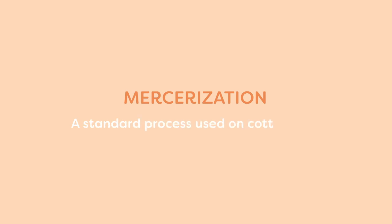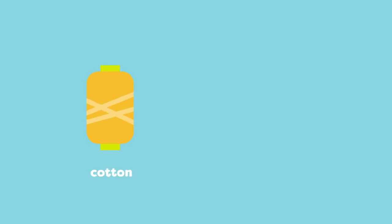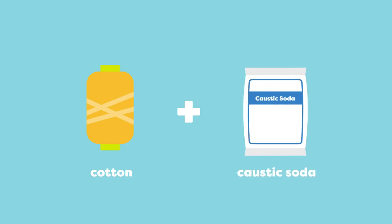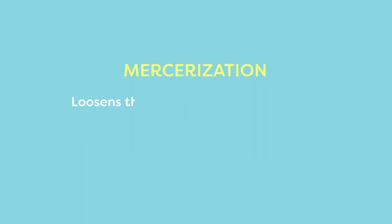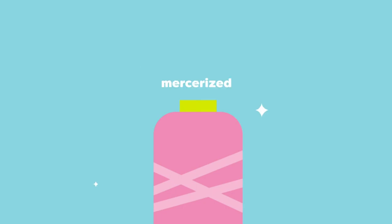Mercerization. Mercerization is a standard process used on cotton yarn. You'll notice that almost all cotton sewing thread is mercerized, but what exactly does that mean? Cotton yarn is mercerized by soaking hanks of it in a caustic soda that is pulled and stretched repeatedly between rods. This process loosens the fibers to help it absorb dye in the next stage of manufacturing. However, as a result of this process, it also slightly increases the strength of the cotton and gives the yarn a silkier, more lustrous appearance. Natural cotton material is dull looking, whereas a mercerized cotton has a soft gloss to it.